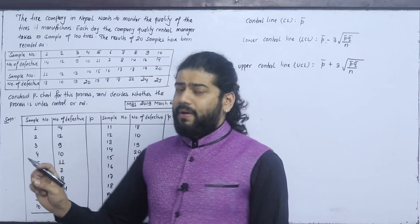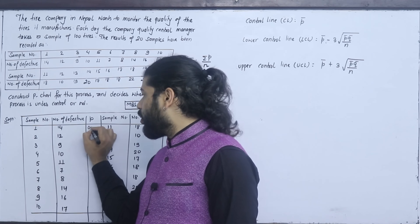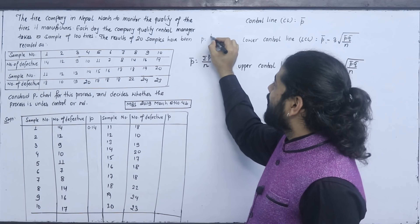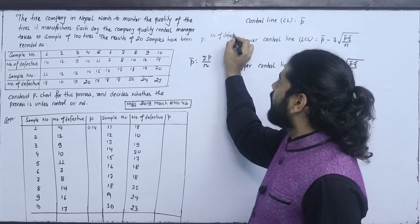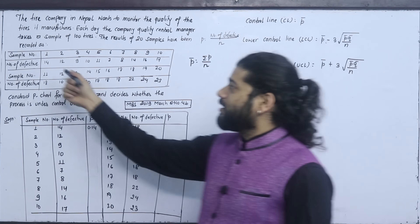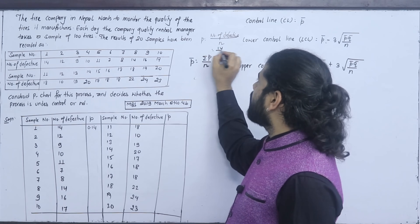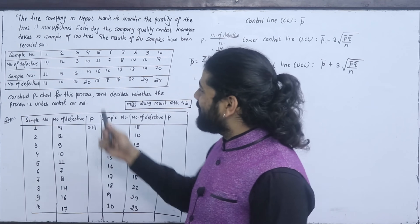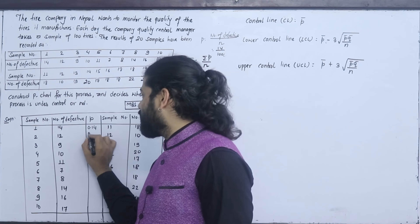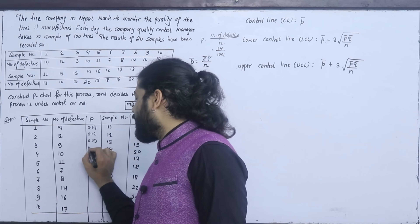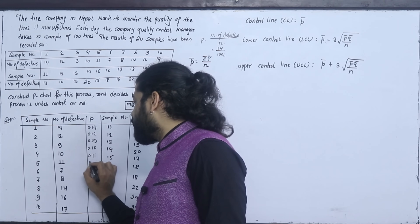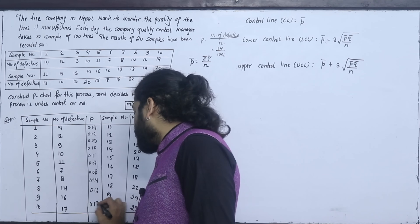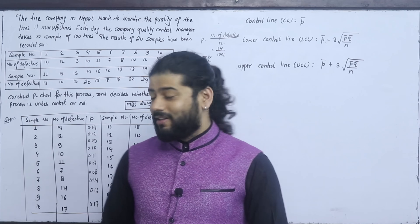The first sample has 14 defects, so the proportion P is 14 divided by 100 = 0.14. The amount of P is the number of defectives divided by the sample size. You divide by 100. So for the samples: 0.14, 0.12, 0.09, 0.10, 0.11, 0.07, 0.08, 0.14, 0.16.